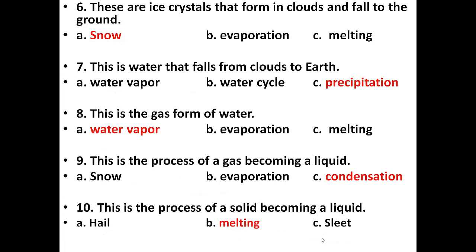Next: These are ice crystals that form in clouds and fall to the ground. The precipitation in the form of ice crystals is seen in snow. Answer is A, snow. Evaporation and melting are different processes, and snow is a kind of precipitation.